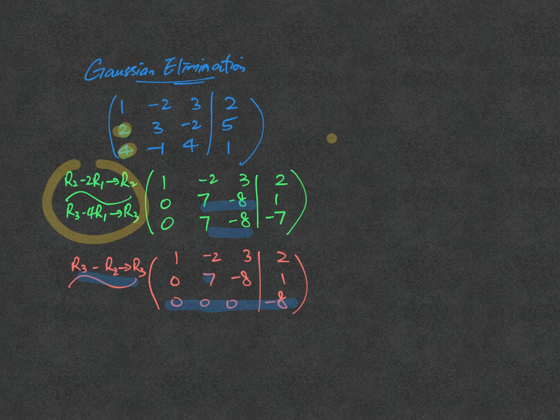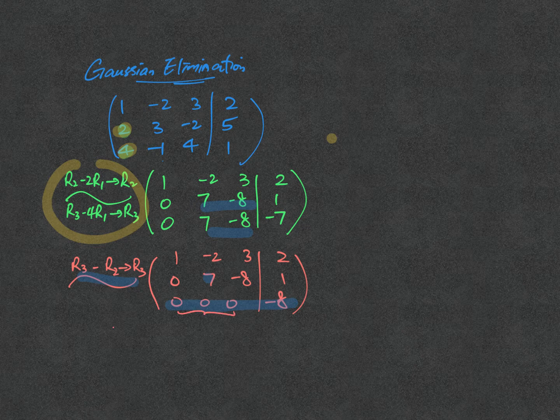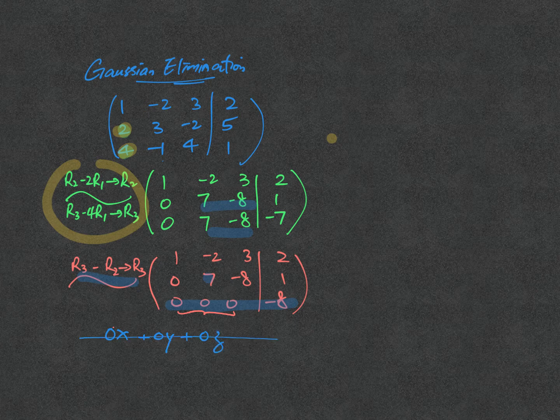But the point to note would be, in the last equation, can you see what we mean by 0, 0, 0? That means there is no x, no y, no z, or simply, that means 0 is equal to minus 8.